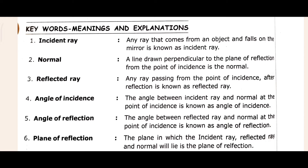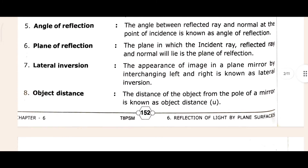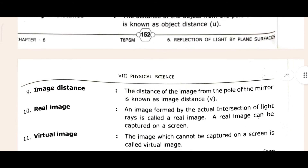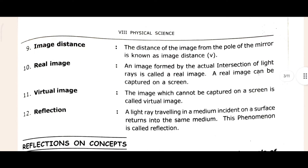The first keyword is incident ray, normal ray, reflected ray, angle of incidence, angle of reflection, and plane of reflection. Those are some of the keywords given. According to the keywords, you can choose which ones you want to write. You can also see keywords like image distance, real image, virtual image, and reflection.